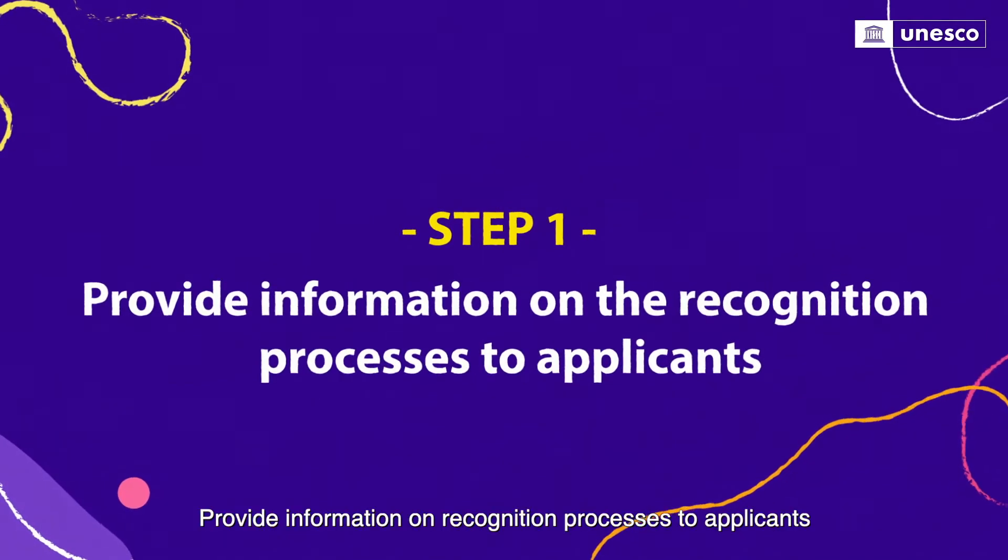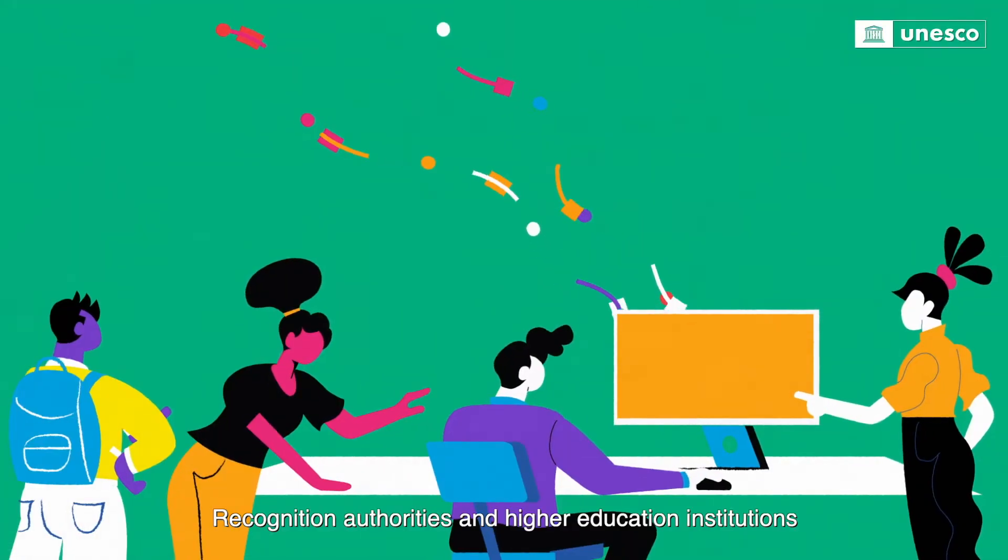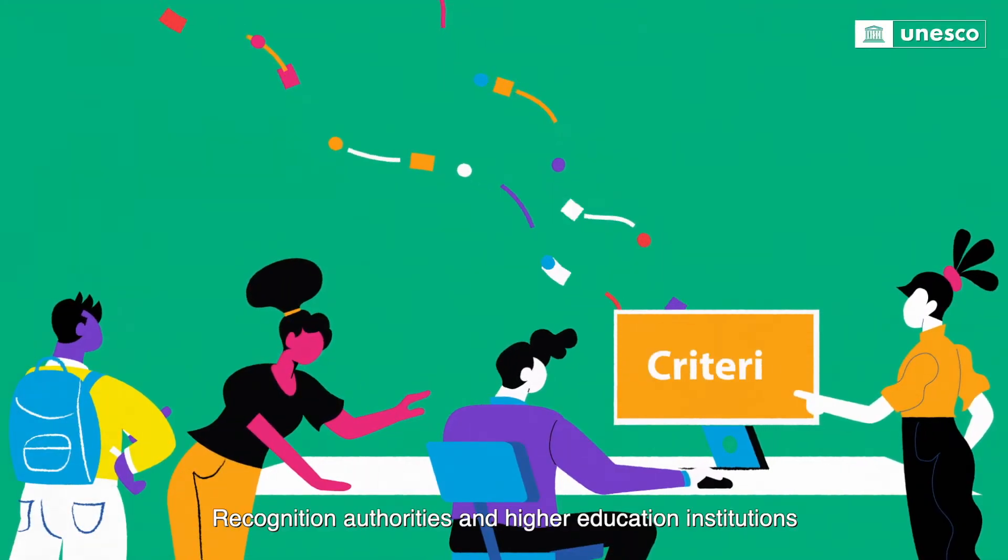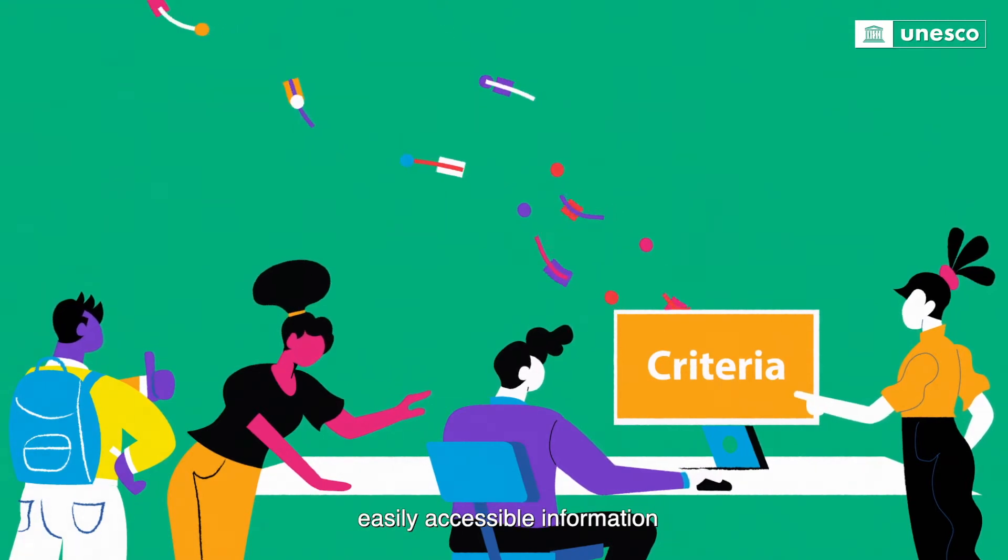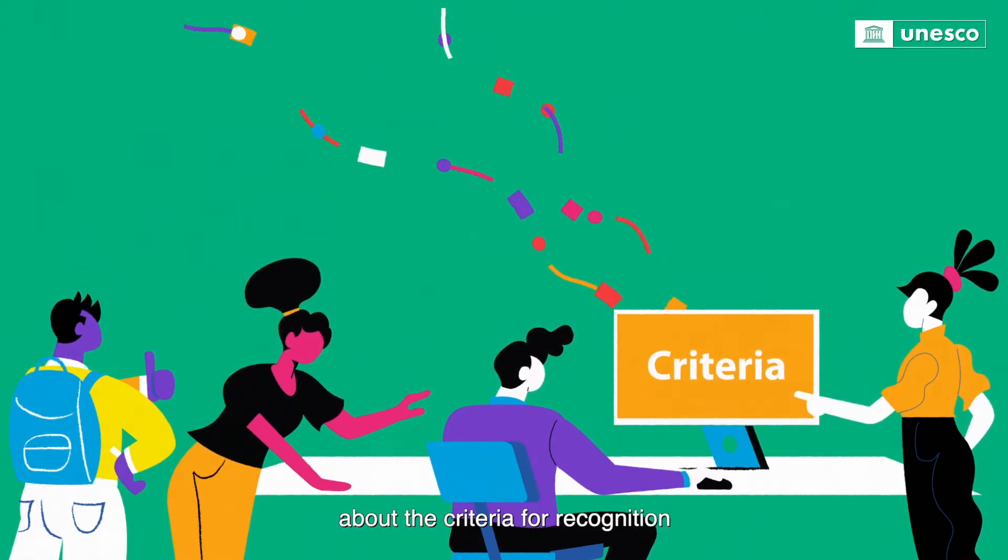Step 1: Provide information on recognition processes to applicants. Recognition authorities and higher education institutions should provide well-formulated, easily accessible information about the criteria for recognition.